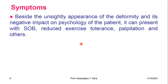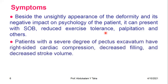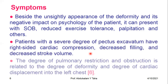The symptoms produced by the anomaly, besides the unsightly appearance and its negative impact on the patient's psychology, include shortness of breath, reduced exercise tolerance, palpitation, and others. The basis for these symptoms is compression of the heart and lungs. Patients with a severe degree of Pectus Excavatum have right-sided cardiac compression, decreased filling, and decreased stroke volume. The degree of pulmonary restriction and obstruction is related to the degree of deformity and cardiac displacement into the left chest.